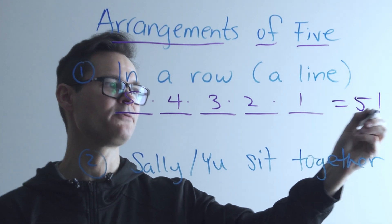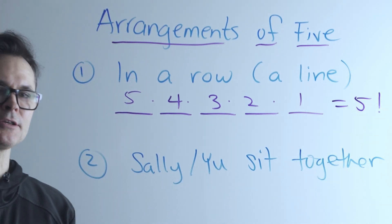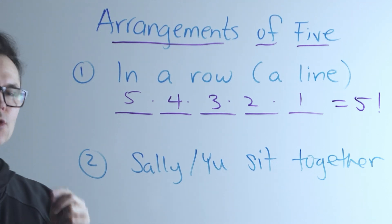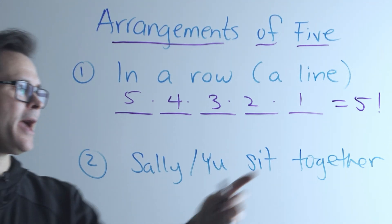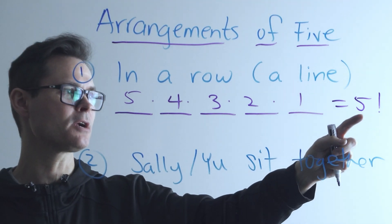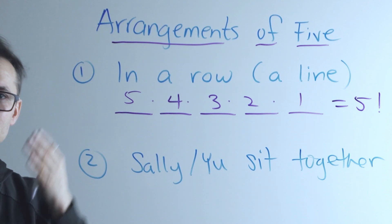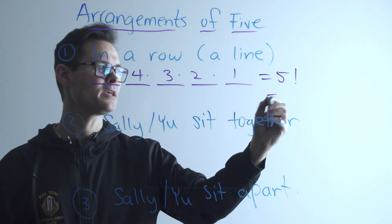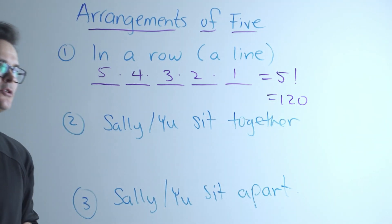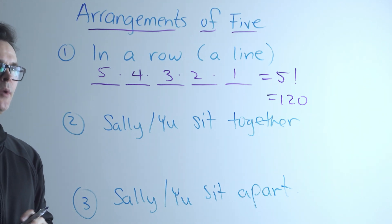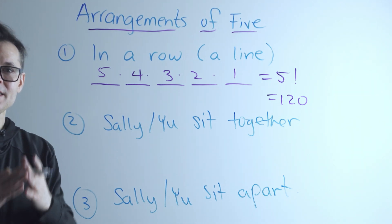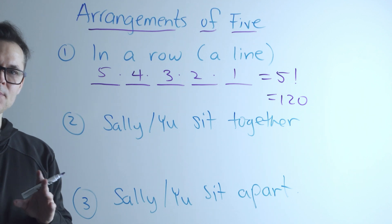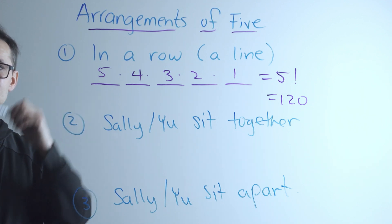That total is also known as 5 factorial. There's a function on your calculator called factorial — it multiplies the indicated number all the way down to one. That gives us 120, so there are 120 different ways to arrange five people in a row.